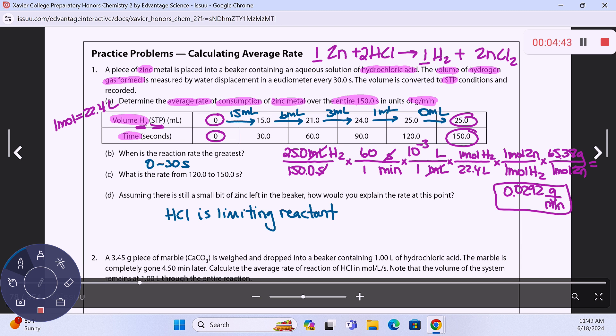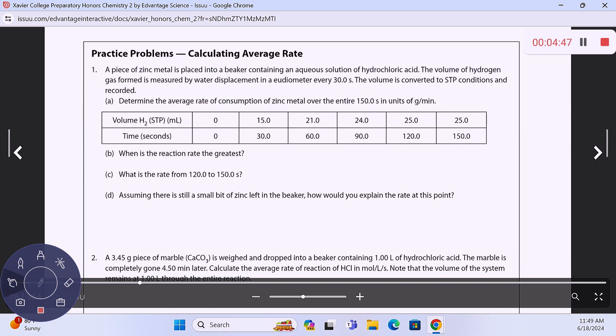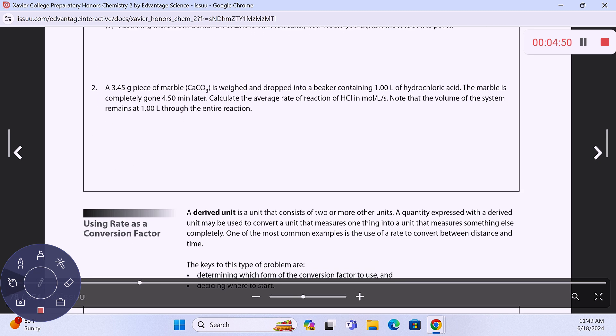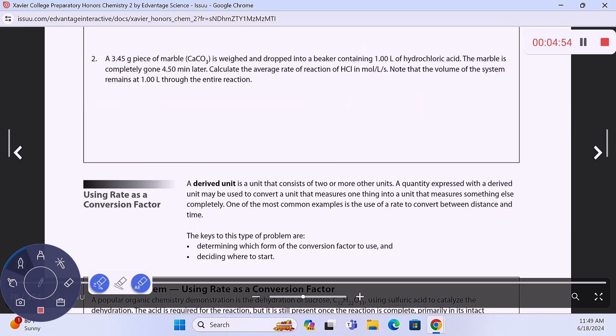Let's take a look at number two. Number two, they gave you a piece of marble, it's calcium carbonate. They put it in a beaker with hydrochloric acid. The marble's gone after 4.5 minutes. They want the average rate of the reaction of hydrochloric acid in molarity per second. So what I would do is, we need to start with calcium carbonate in hydrochloric acid. You're going to produce calcium chloride and carbonic acid, which is H2O and CO2. This is your balanced - actually not so balanced, I think you need a two here in front of HCl.